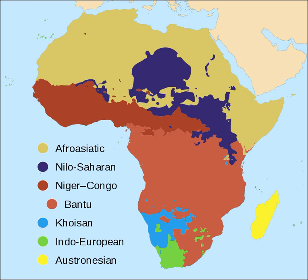Some linguistic features are particularly common among languages spoken in Africa, whereas others are less common. Such shared traits probably are not due to a common origin of all African languages. Instead, some may be due to language contact resulting in borrowing, and specific idioms and phrases may be due to a similar cultural background. Widespread phonetic features include certain types of consonants such as implosives and ejectives, the labiodental flap, and in southern Africa, clicks.